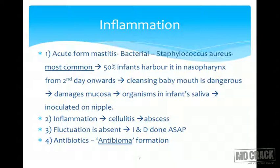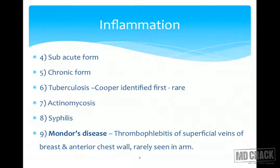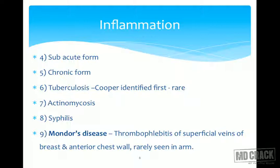Overzealous use of antibiotics can result in antibioma formation — the entire abscess cavity becomes a sterile cavity that is still painful and requires intervention. There are also subacute and chronic forms depending on the stage the patient presents. Tuberculosis — one of the most common diseases in our country — also affects the breast; Cooper first identified and described this entity. Other rare forms include actinomycosis and syphilis. There is also Mondor's disease — thrombophlebitis of the superficial veins of the breast and anterior chest wall, rarely extending to the axilla and arm.